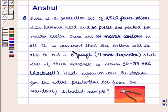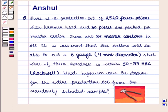It is assumed that the cutters will be able to cut a 6 gauge, i.e. 4 mm diameter steel wire, if their hardness is within 50 to 55 HRC Rockwell. What inference can be drawn for the entire production lot from the randomly selected samples?